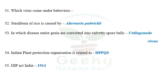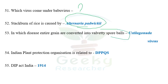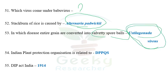The next question: which virus comes under Babuvirus? Banana bunchy top virus comes under Babuvirus, but I don't know if it was given in the options. The next question: stock burn of rice is caused by Alternaria padwickii. The next question: in which disease are entire grains converted into velvety spore balls? The answer is covered smut or loose smut — in this disease, the entire grains are converted into black velvety spore balls.